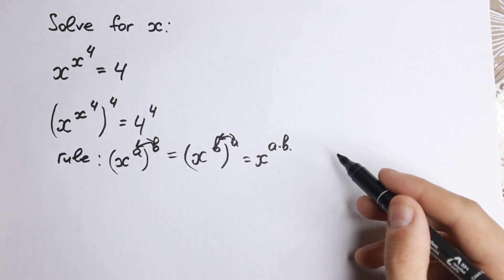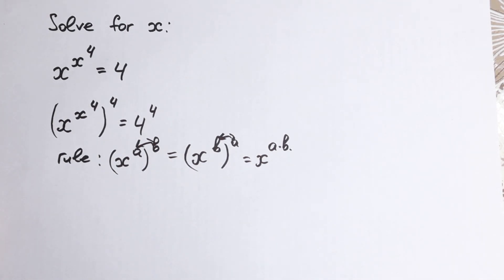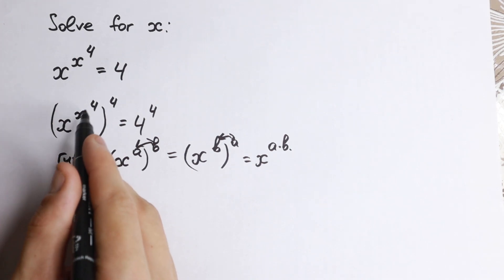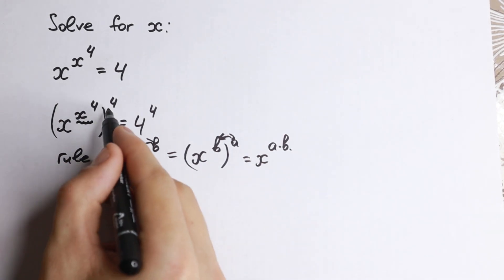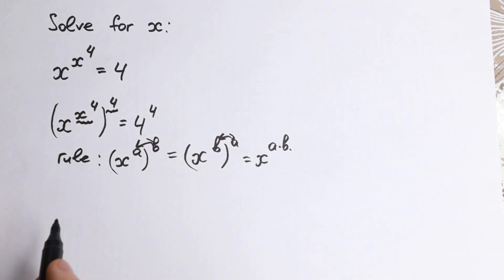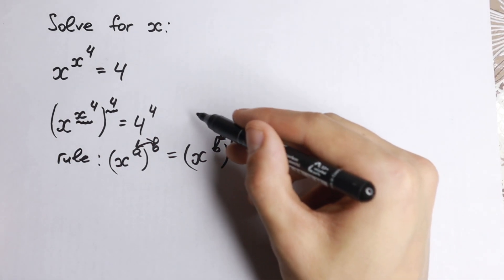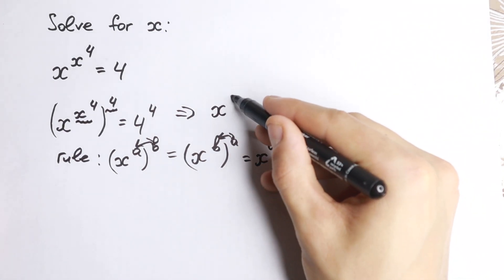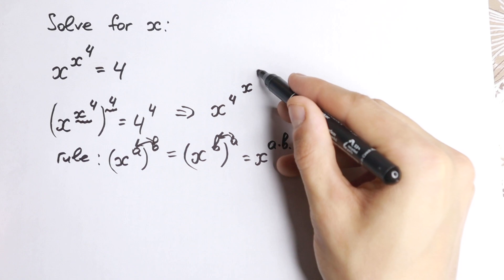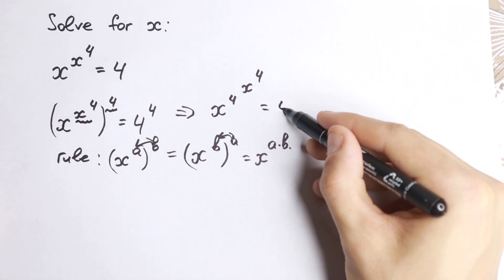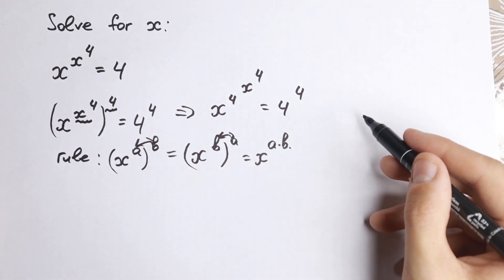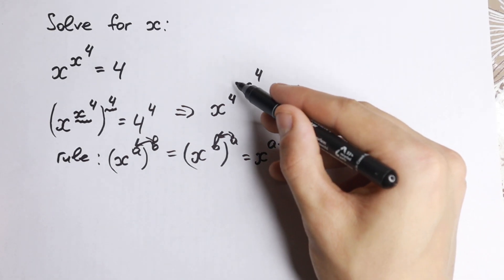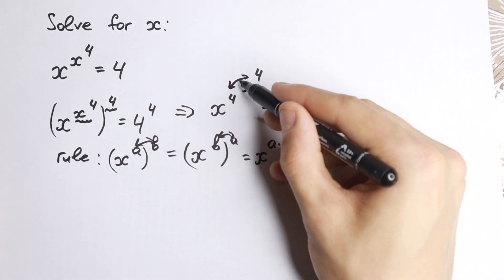And I want to mention that this rule we can use in this moment right here. So we have x to the x to the fourth, where x to the fourth is this power a and four is our b. So we can easily use this rule of interchange. We can write this as x to the fourth to the power x to the fourth equal to four to the fourth. We just changed these powers right here.